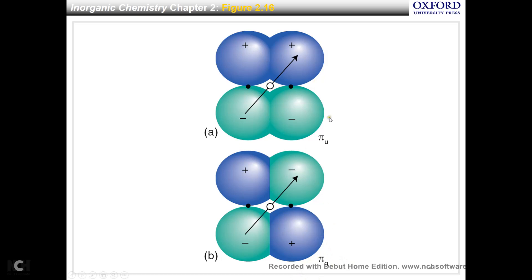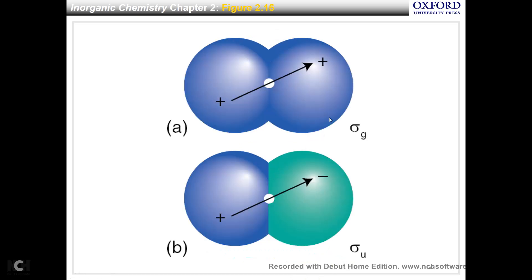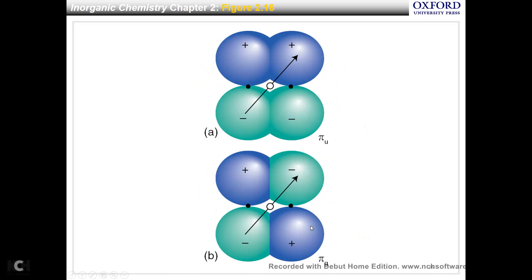This is different from sigma. In sigma orbitals, sigma-G is bonding and sigma-U is anti-bonding. For pi orbitals, pi-U is bonding and pi-G is anti-bonding.